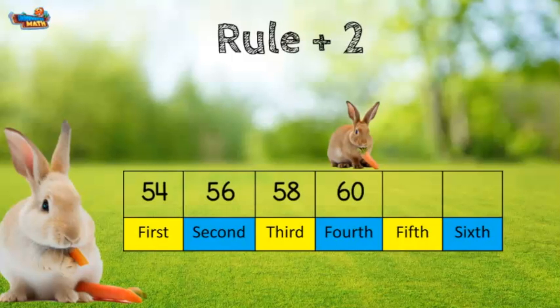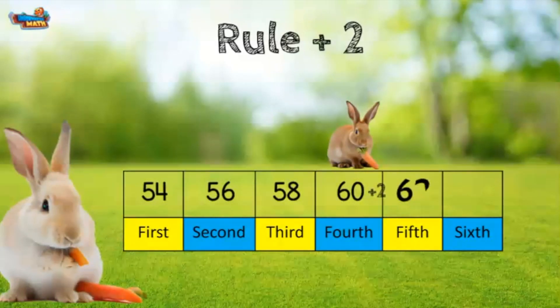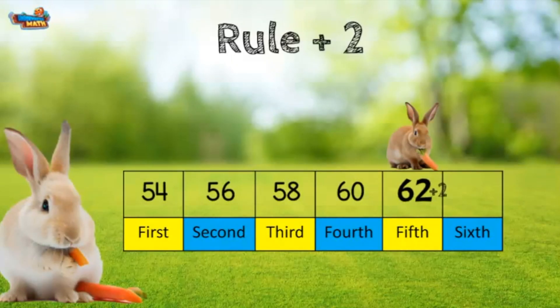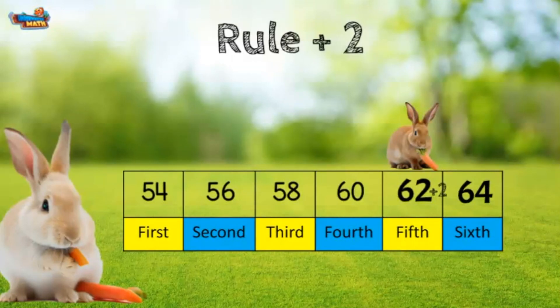To find the fifth position we follow the rule by adding 2 to the digit in the fourth position. 60 plus 2 equals 62. Then we continue the pattern by adding 2 to 62 for an answer of 64.